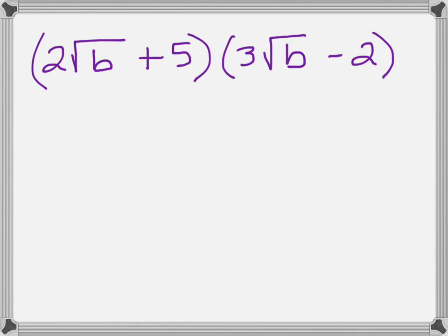Now we're going to multiply 2 binomials which contain radicals. We do it in the same manner we did with regular binomial multiplication. We're going to take the first term and multiply it times the first term, 2 times 3 is going to give us 6, and then we have the square root of b squared.